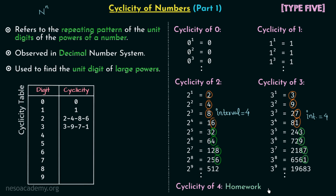Now I believe you can calculate the cyclicity of 4 on your own. Try to find out the cyclicity of 4 and post it in the comment section. In the next lecture I will explain how we get the cyclicity of digit 4 and we will find the cyclicities of the remaining digits.